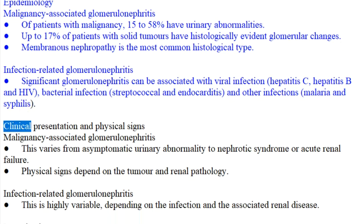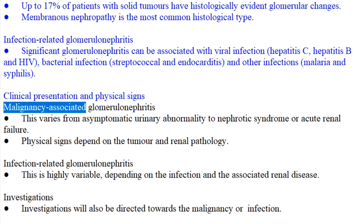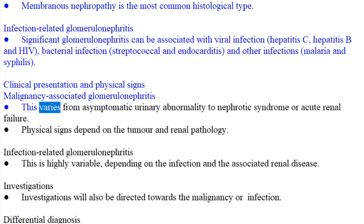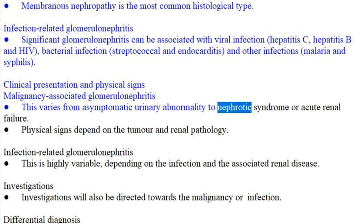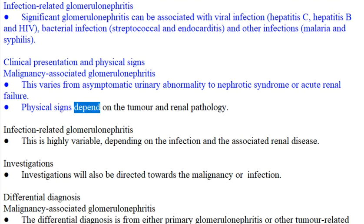Clinical presentation and physical signs. Malignancy-associated glomerulonephritis: this varies from asymptomatic urinary abnormality to nephrotic syndrome or acute renal failure. Physical signs depend on the tumor and renal pathology.